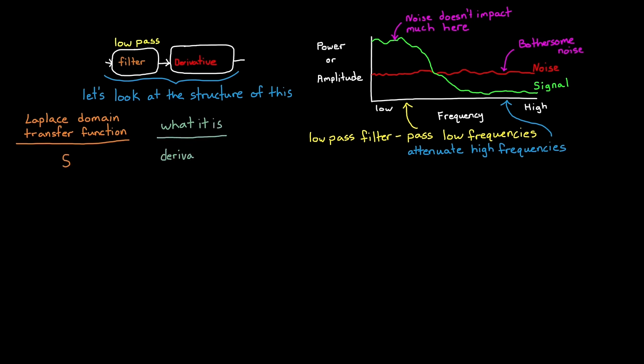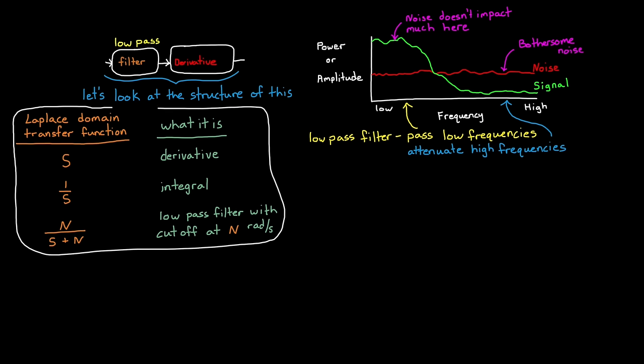s is the Laplace domain representation of a derivative. And the inverse, 1 over s, is the representation of an integral. And n divided by s plus n is a low pass filter, first order, where the number n is the cutoff frequency in radians per second. So if you see the transfer function 10 over s plus 10, this is a low pass filter with cutoff frequency at 10 radians per second.